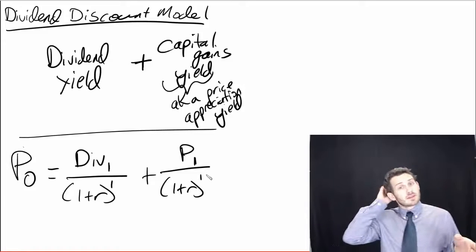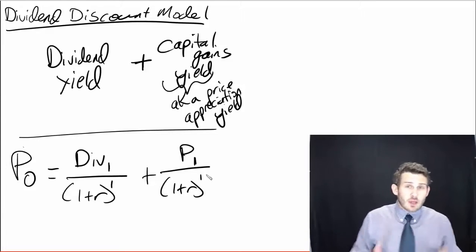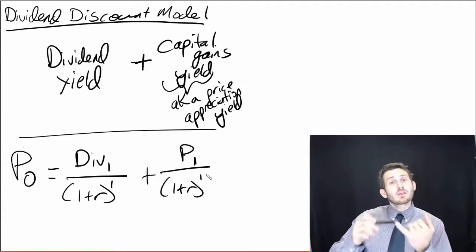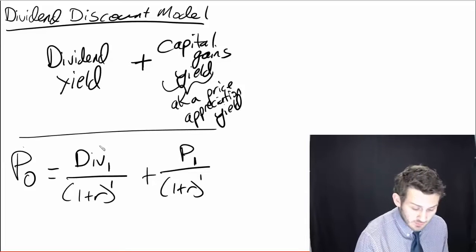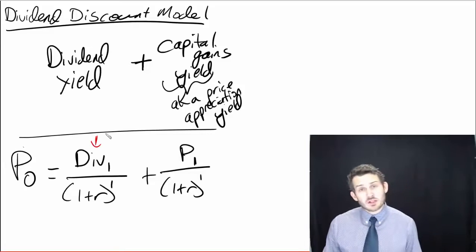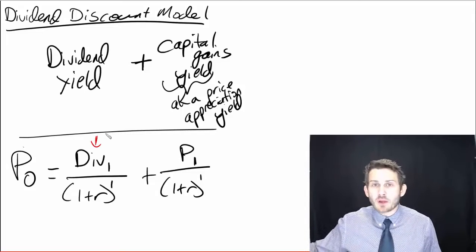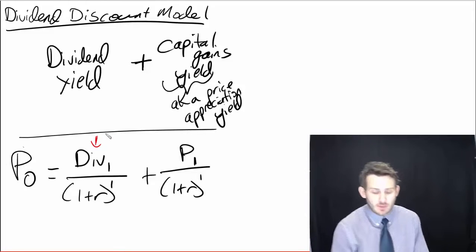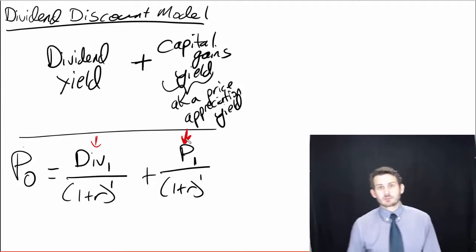Now what we see in this is that we're going to be looking at the price next year. So if we're evaluating the price today, we're saying what is our expected dividend over the next year going to be? That is this component right here, our dividend over the next year. And then we're saying what am I going to be able to sell this for next year if I want to? What's the value next year going to be? And that is what's given by that P one right here.